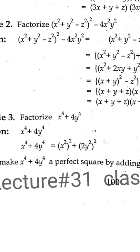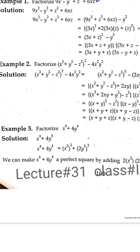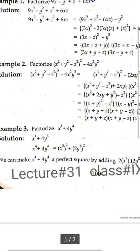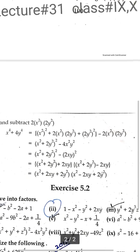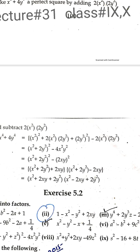Factorize x⁴ plus 4y⁴. We can make it a perfect square by adding and subtracting 2x²·2y², which equals 4x²y². Adding and subtracting this term gives us (x² + 2y²)² minus 4x²y², which is now in the form of a complete a² minus b² expression.